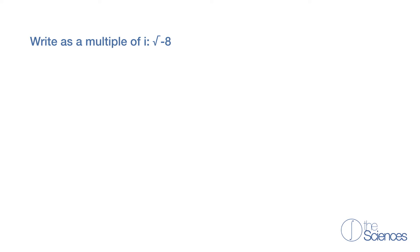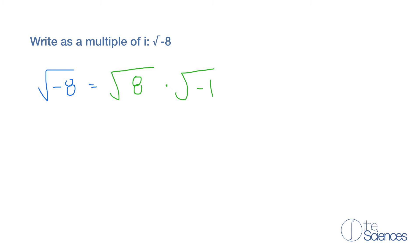Write as a multiple of i, the square root of negative 8. So we can break down the square root of negative 8 into the square root of 8 times the square root of negative 1. Now we can break down the square root of 8 into the square root of 4 times the square root of 2 times the square root of negative 1.